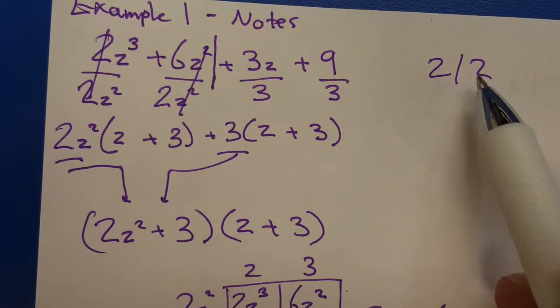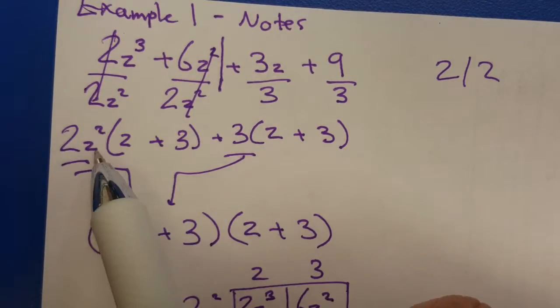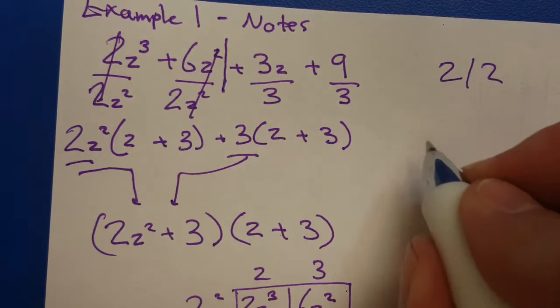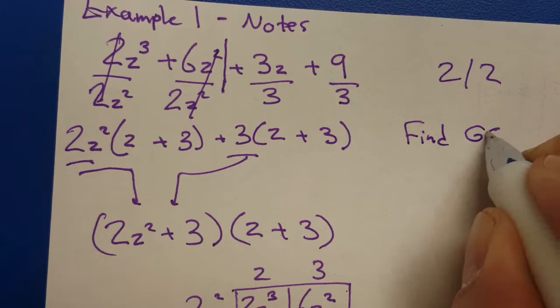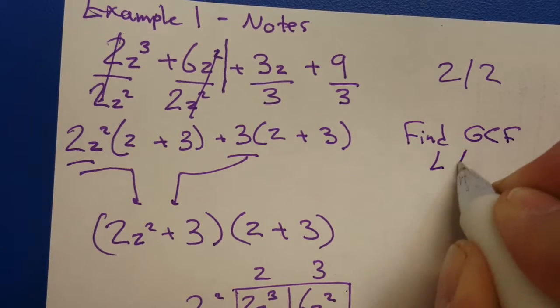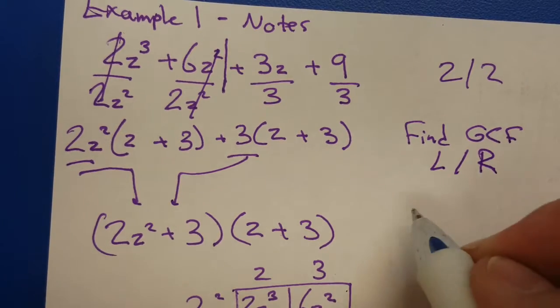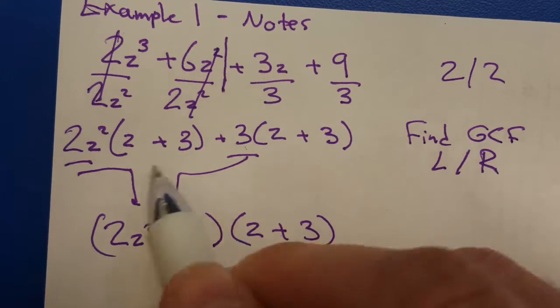So again, the process. Split it two by two. Factor something from the left. Factor something from the right. So find a GCF on the left side and the right side. And then your third move. So I found the GCF and then you group.